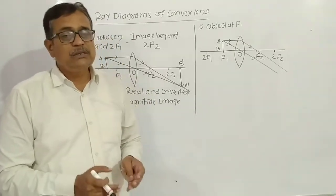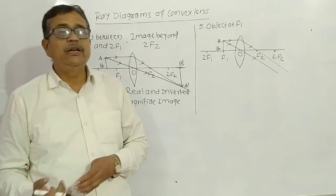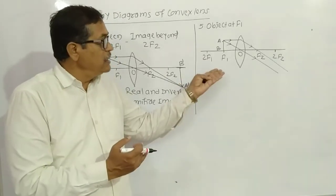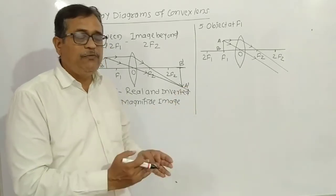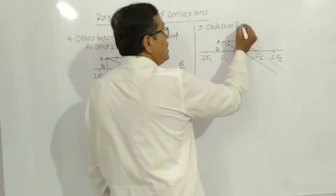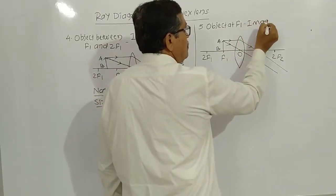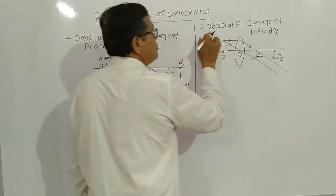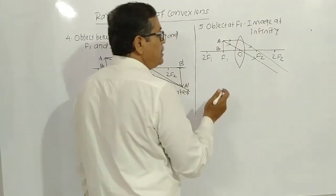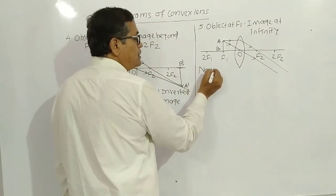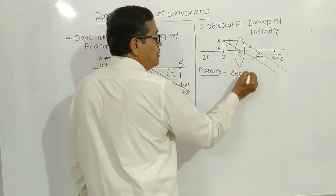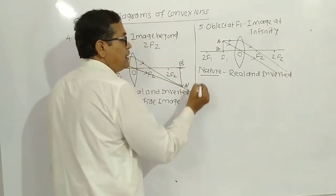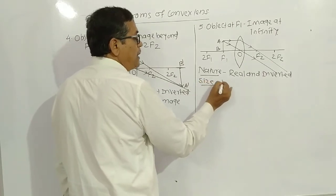In the first diagram from the last video, when the object was at infinity, the image was at focus. But here in diagram five, the object is at focus and the image is at infinity. The nature of image is real and inverted, and the size is highly magnified — a very very large image.